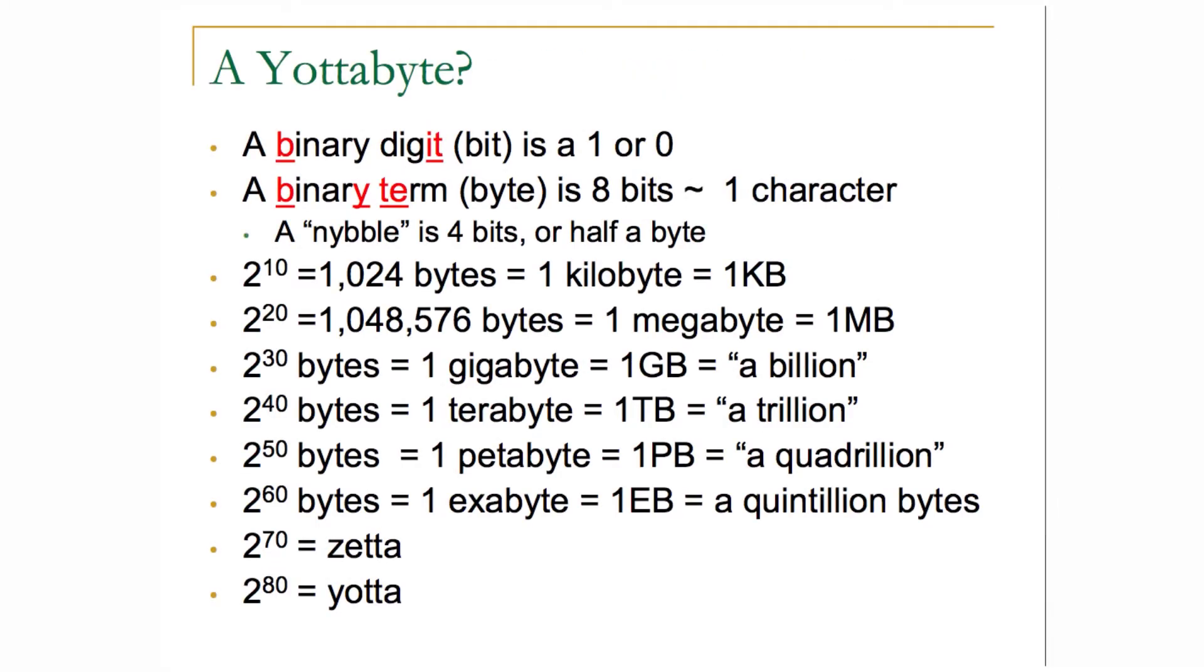Students should understand that the term bit is actually an acronym for binary digit. So a binary digit is just a zero or a one. If we can string several of these together, typically eight, we have a byte. A byte is a representation of eight bits that can be used to represent a single character.